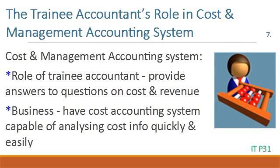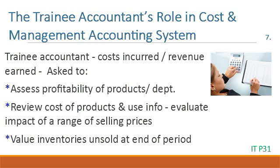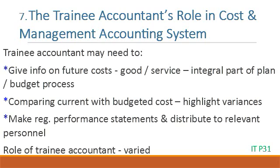7. In a cost and management accounting system, the role of the trainee accountant is to provide answers to questions on cost and revenue. A business must have a cost accounting system capable of analyzing cost information quickly and easily. If a trainee accountant knows about costs incurred or revenue earned, they will be asked to assess how profitable certain products or departments are, review the cost of products and evaluate the impact of a range of selling prices, and value the inventories of unsold goods at the end of a period. A trainee accountant may also need to provide information on future costs, compare current costs with budgeted costs and highlight variances, and produce regular performance statements for relevant personnel.